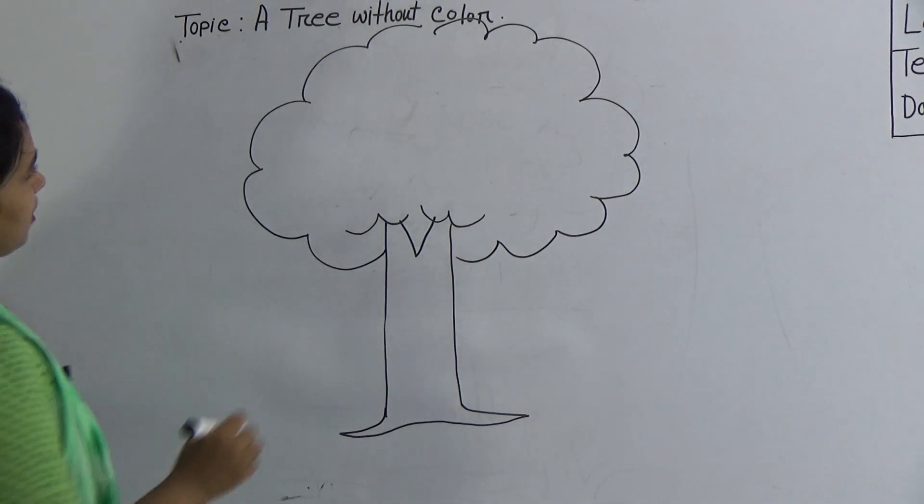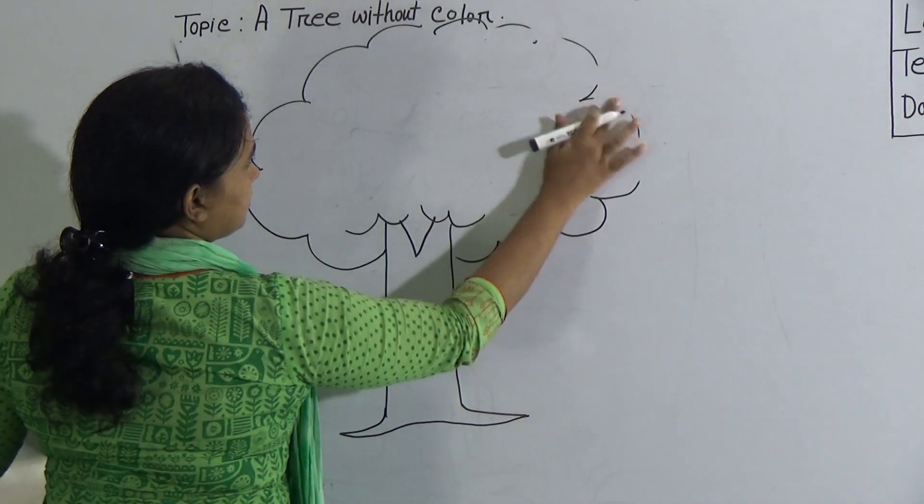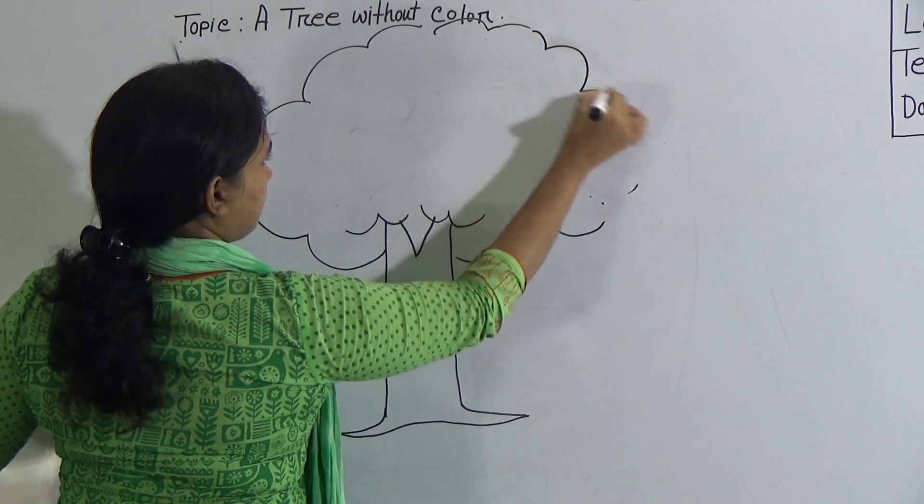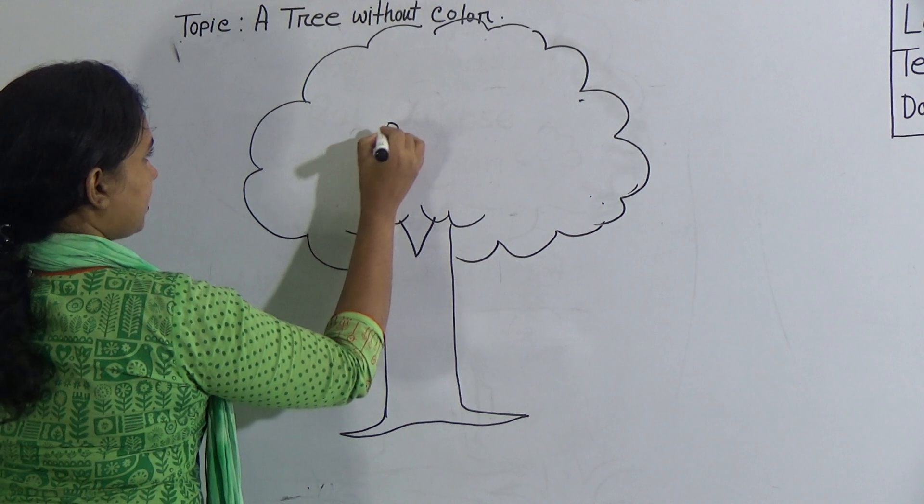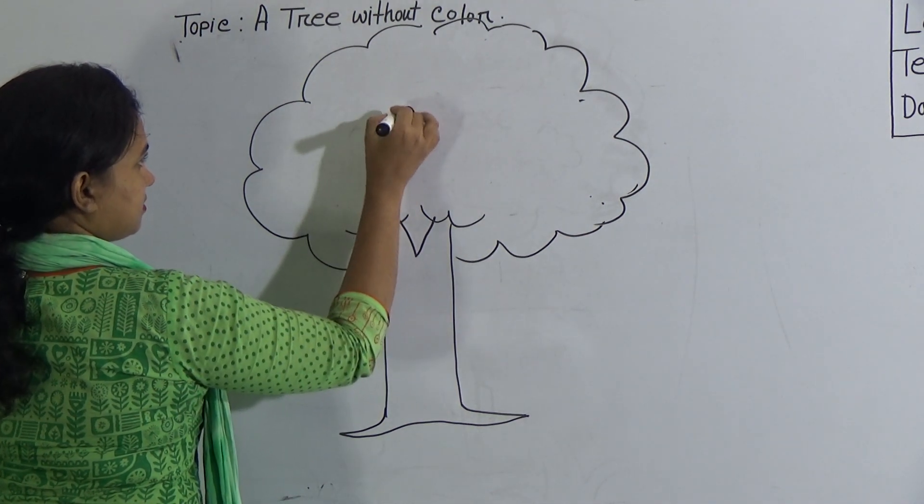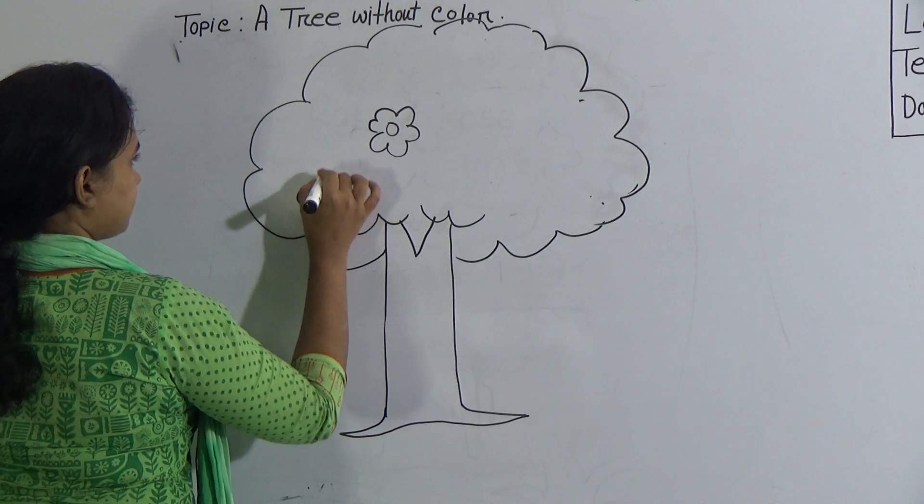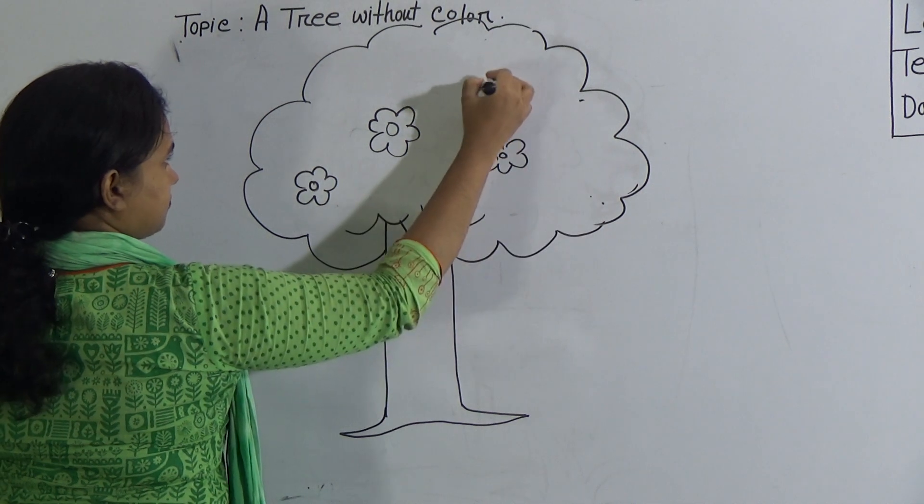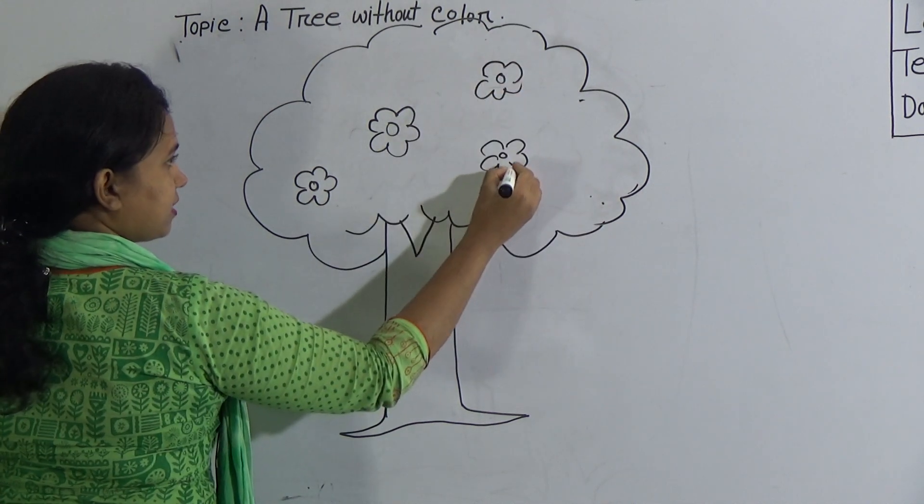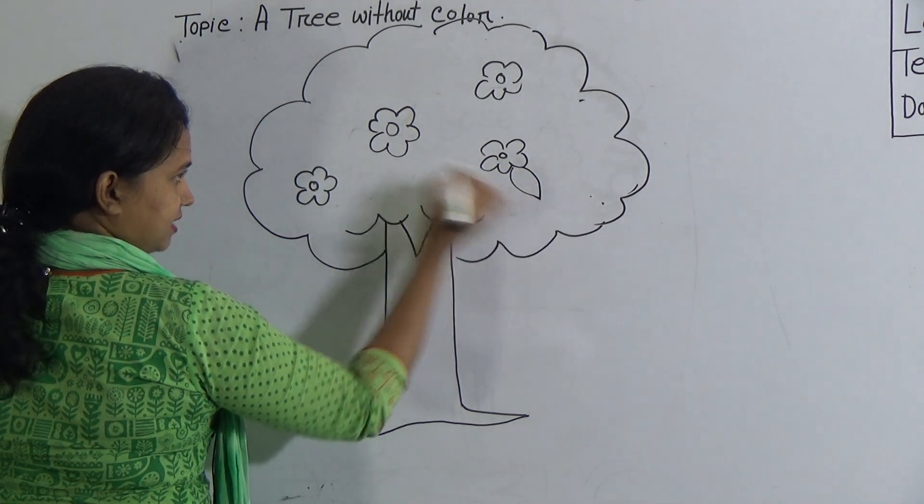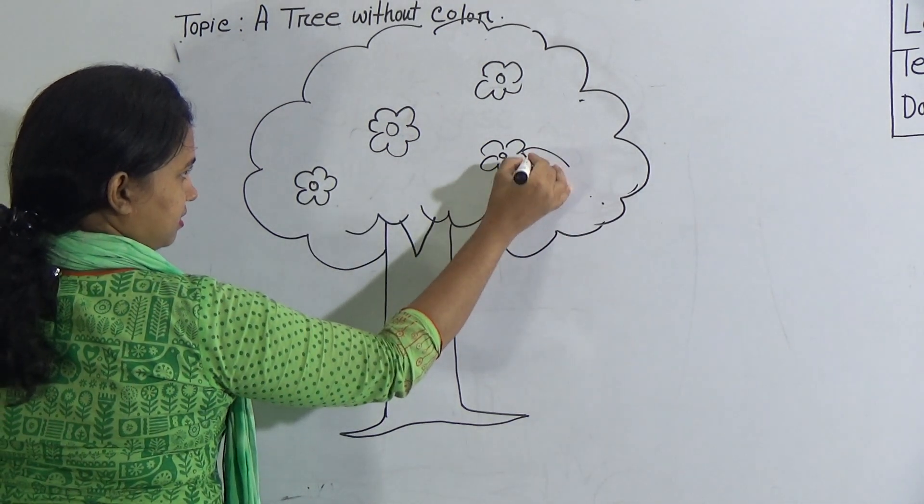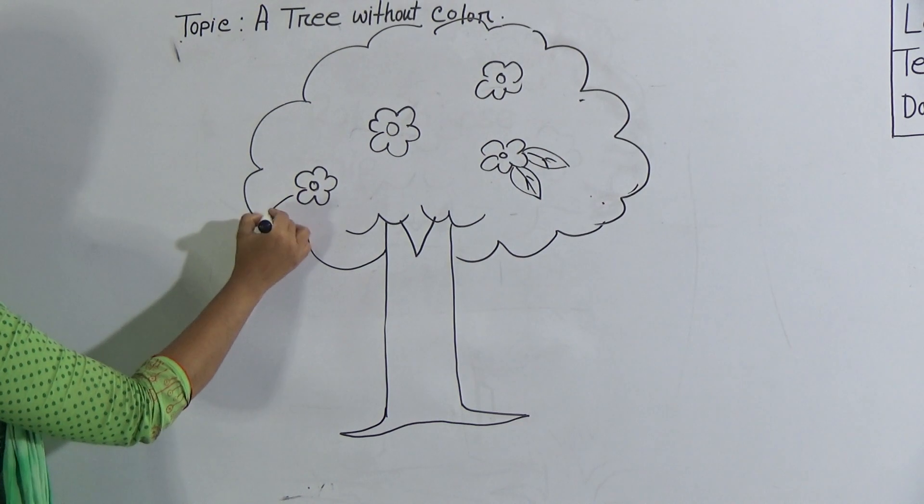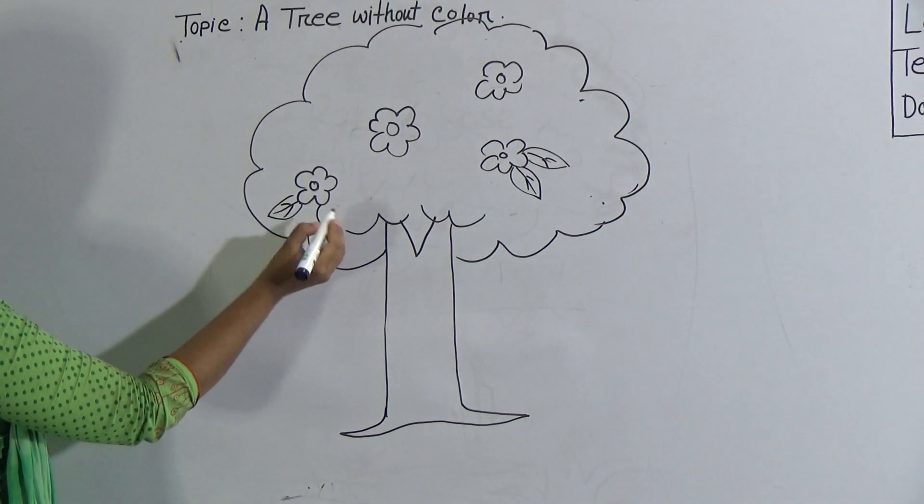If you want, you can give here some flower. This looks like that. If you want this like, like this, give some flower. Here you can use this type of line and join if you want. Not mandatory. And then, here also.